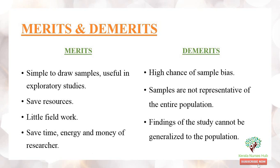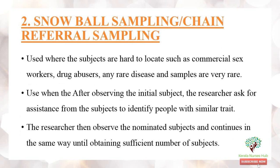The demerits: there are high chances of sample bias because the theory of probability is not applied. The samples are selected on the basis of a certain purpose, the samples are not representative of the entire population, and the findings of the study cannot be generalized to the entire population, as the samples may not be the true representative of the population.